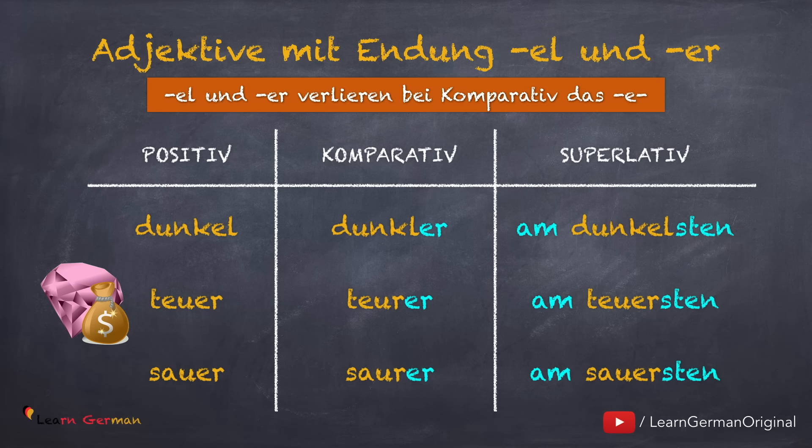So was passiert hier? Die Adjektive verlieren by Komparativ das E. While forming the comparative forms of these adjectives, the E before the L and the R disappears — but it is retained in the Superlative-Form.